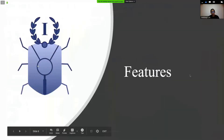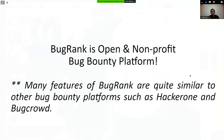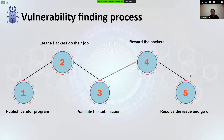There are many bug bounty platforms such as HackerOne and BugCrowd. What makes BugRank different is that our platform is open and non-profit. The bug reporting process starts with vendors listing their programs on BugRank. Hackers join to find bugs and submit them to the platform. After that the vendor validates the submission, rewards the hacker for good reports, and they work together to resolve the issues.